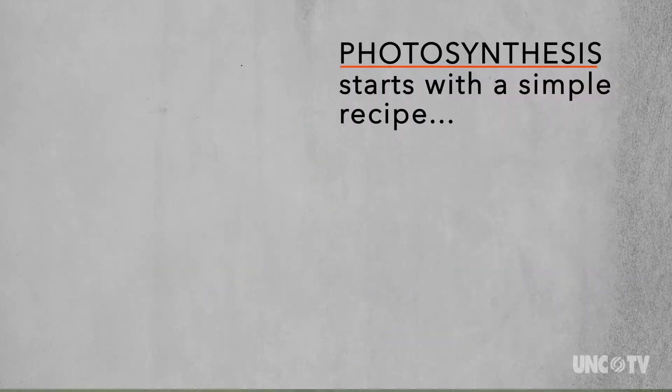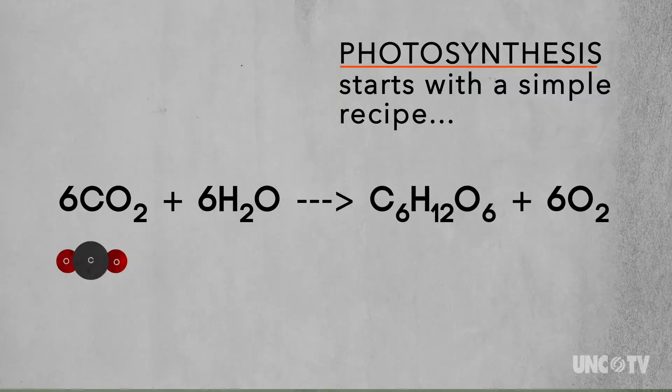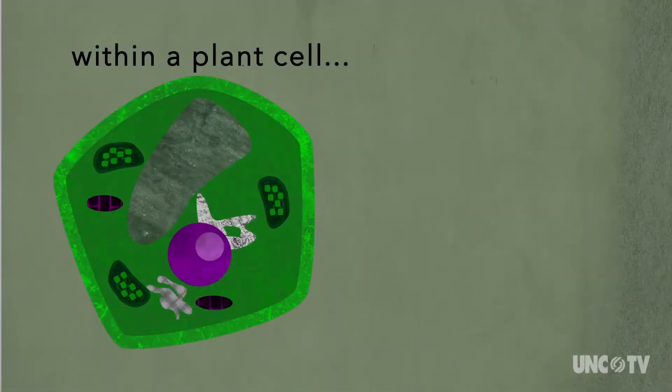If you boil it down, photosynthesis starts with a simple recipe. Take a little carbon dioxide from the atmosphere, add some water and sunlight, throw in some essential nutrients, and within a plant cell,